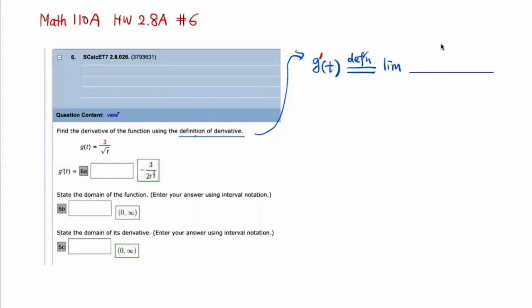That difference quotient is kind of like the slope — it's y2 minus y1 over x2 minus x1. Here, y2 is g of t plus h, and y1 is g of t. The change in the horizontal direction, t2 minus t1, is h. So we take the limit of this difference quotient as h approaches 0. That's the definition for the duality of function g with respect to t.